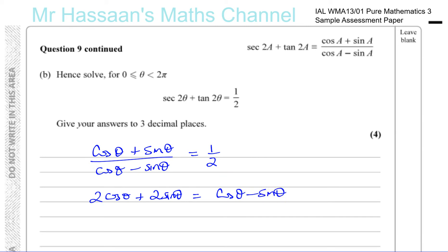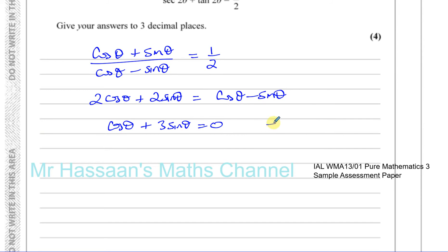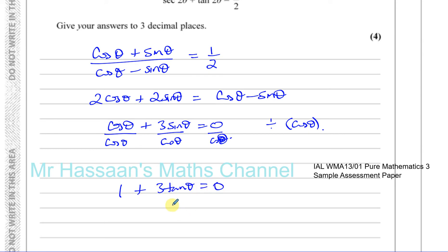Let's cross-multiply: multiply both sides by 2 and by (cosθ − sinθ). We get 2cosθ plus 2sinθ equals cosθ minus sinθ. Bringing the cosθ and sinθ terms together: 2cosθ minus cosθ is cosθ, and 2sinθ plus sinθ is 3sinθ, giving cosθ plus 3sinθ equals 0. Dividing both sides by cosθ gives 1 plus 3tanθ equals 0, so tanθ equals −1/3.